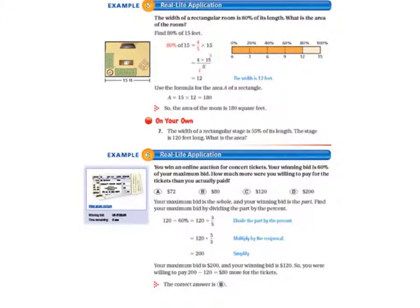Moving on to example five, we have our real-life application. The width of a rectangular room is 80% of its length. What is the area of the room? So we need to find 80% of 15 feet. So we change our percent to a fraction. 80% of 15 equals four-fifths times 15, and we do some cross-canceling, and we end up with a width of 12 feet.